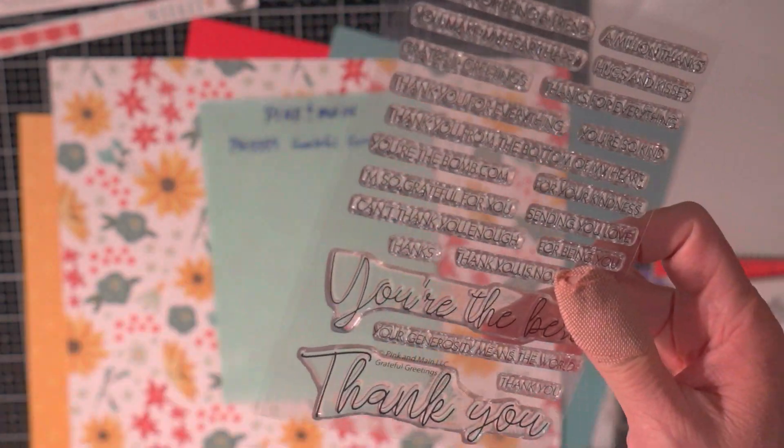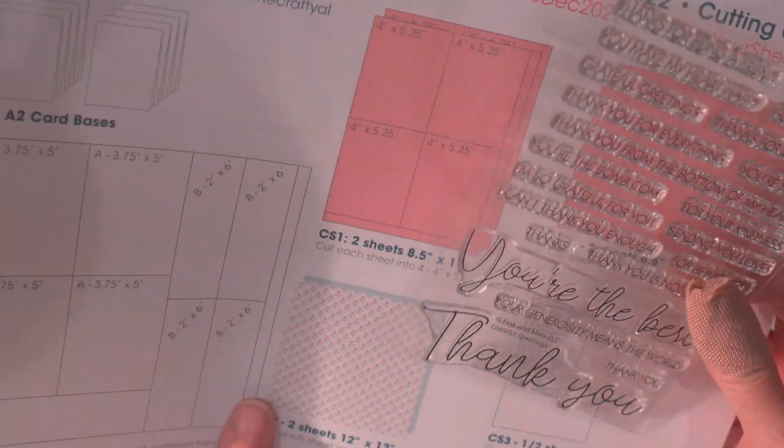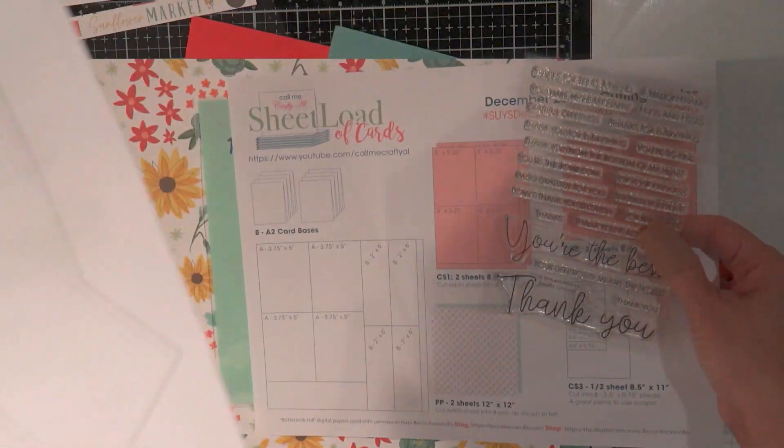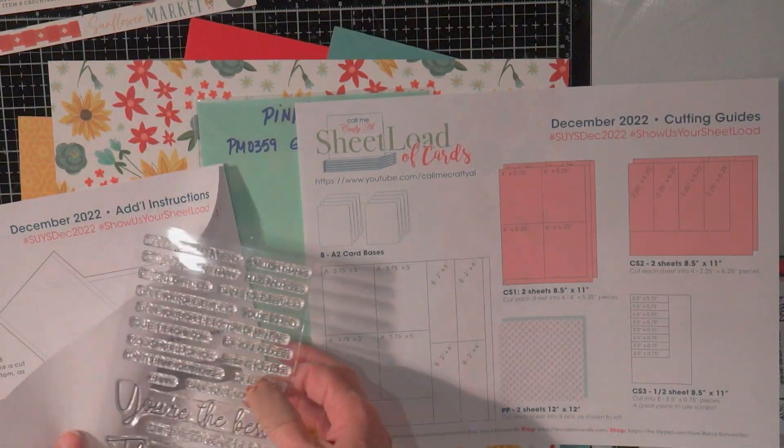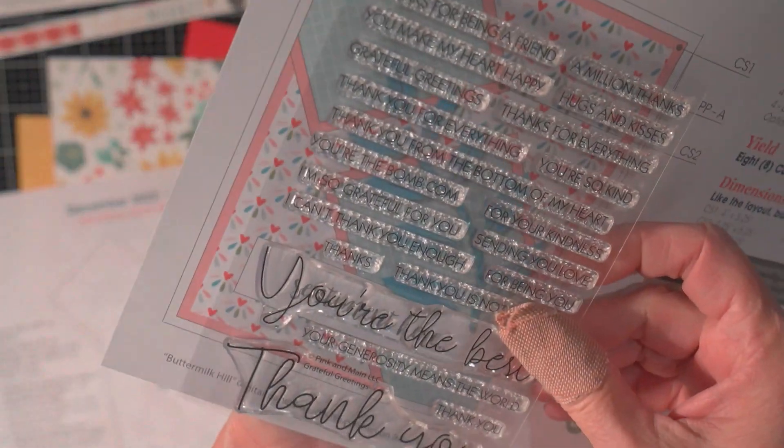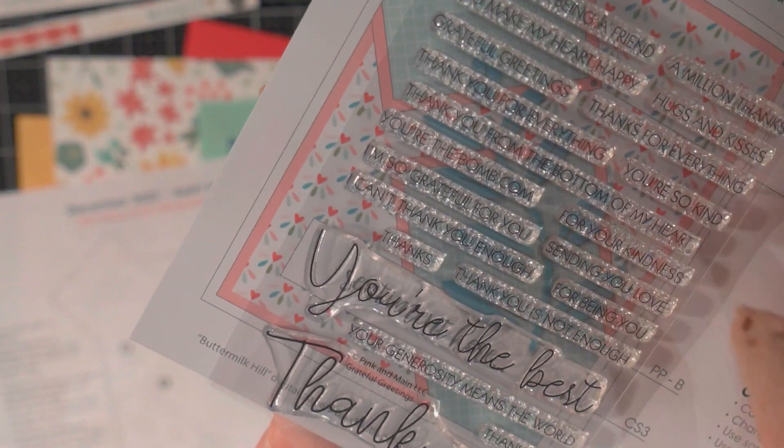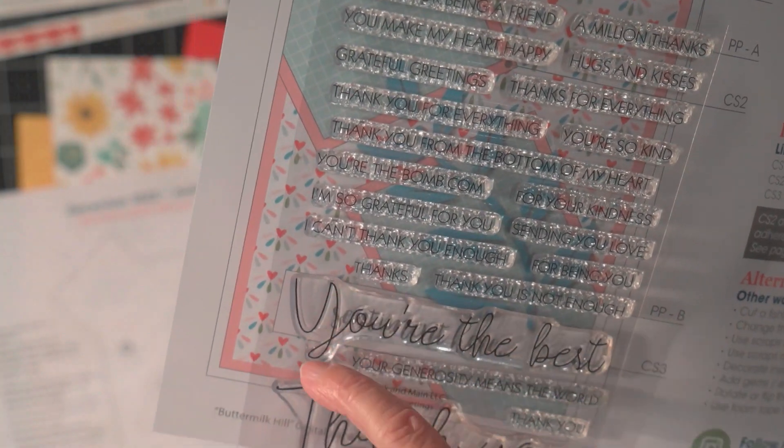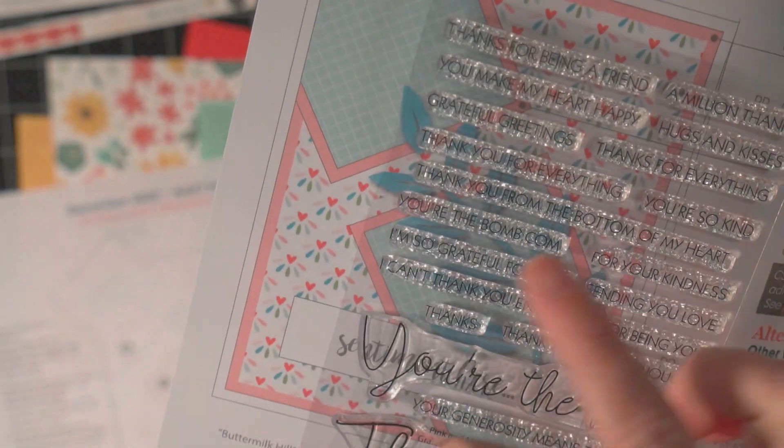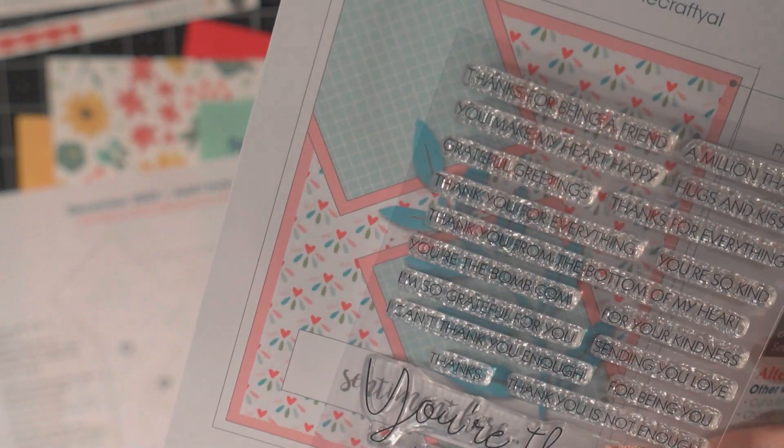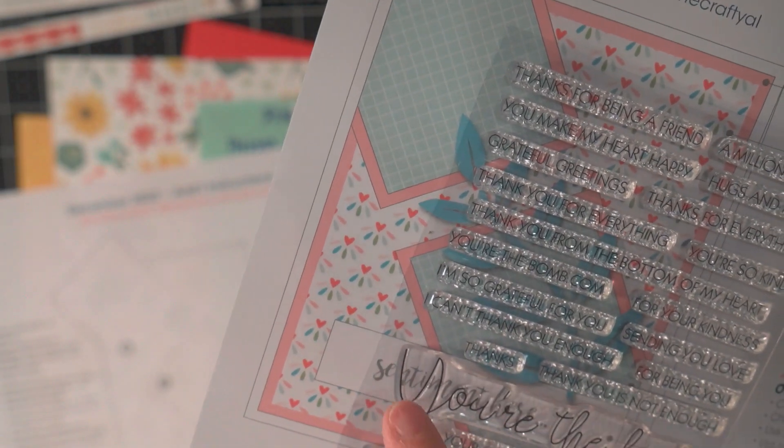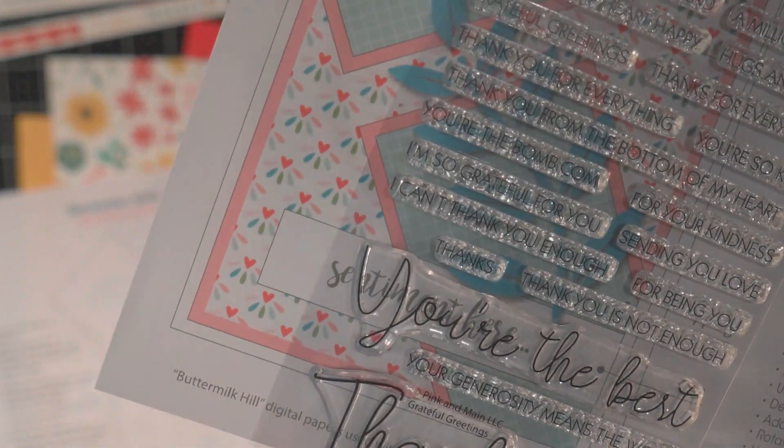Now another thing that you can do is if you print the instructions 100% so that it's full size then you can lay your stamp set on here and see if that stamp is going to fit on the sentiment strip. So I noticed that this Y is just a little bit bigger than the sentiment that she has on there so what I'll do is I'll make that strip a little bit taller than what she calls for in the instructions.